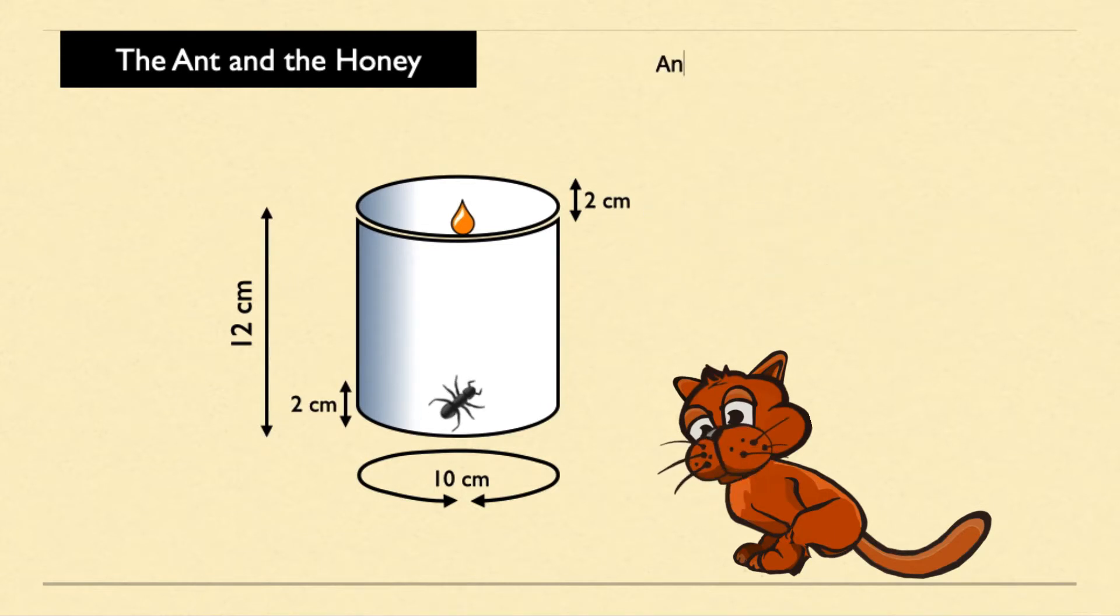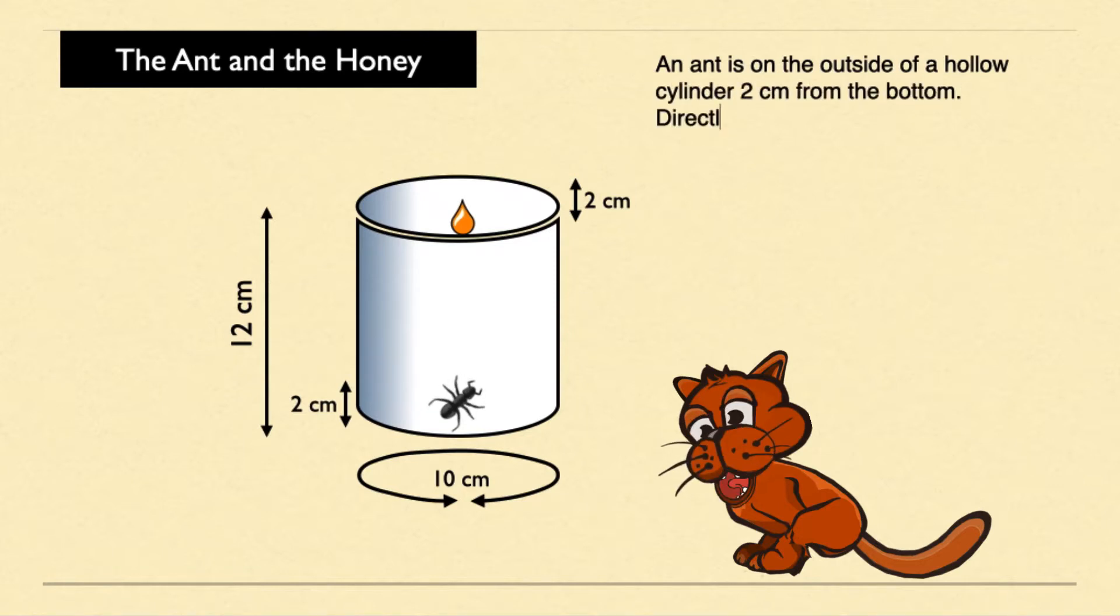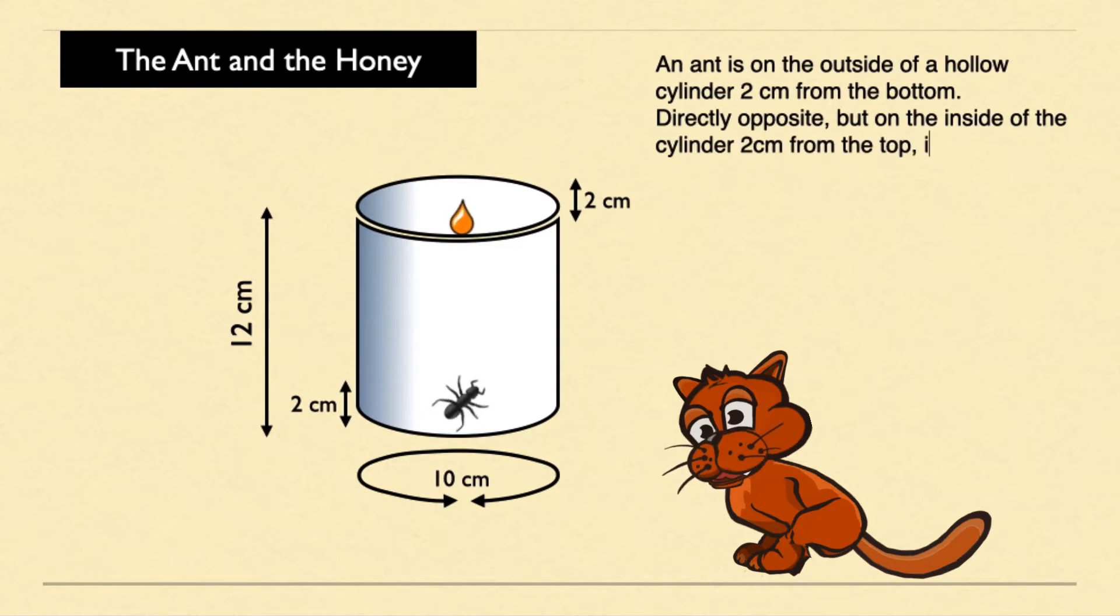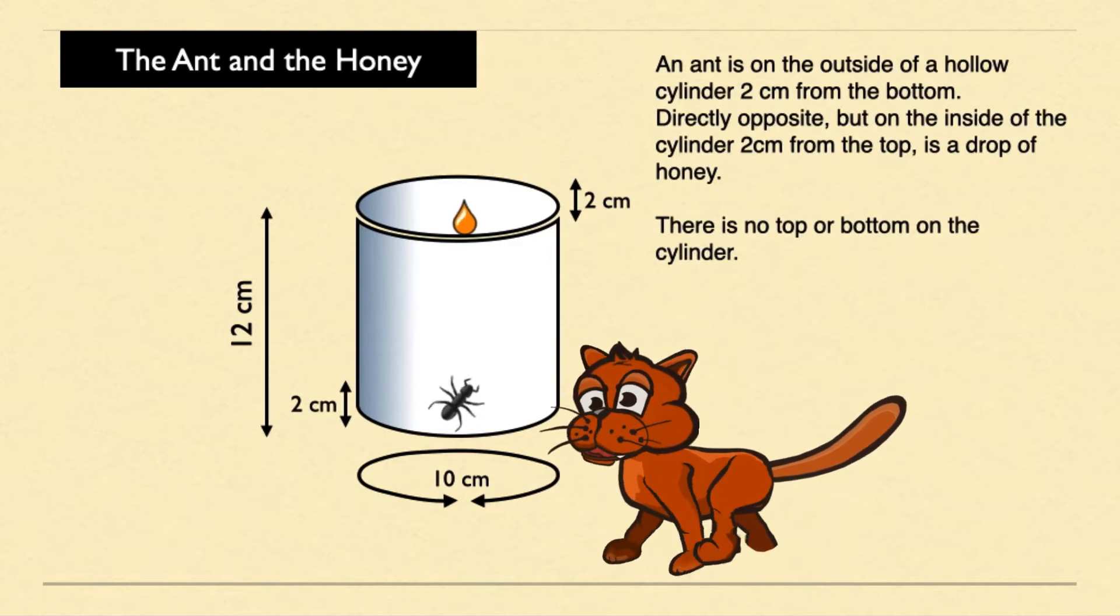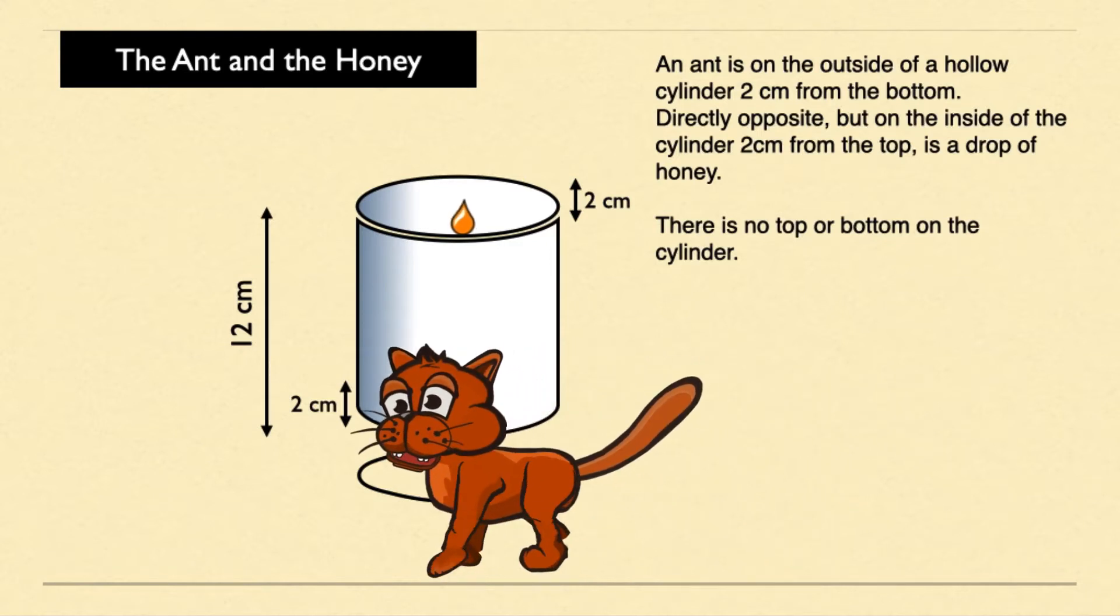An ant is on the outside of a hollow cylinder, two centimeters from the bottom. Directly opposite, but on the inside of the cylinder, two centimeters from the top, is a drop of honey. There is no top or bottom on the cylinder.